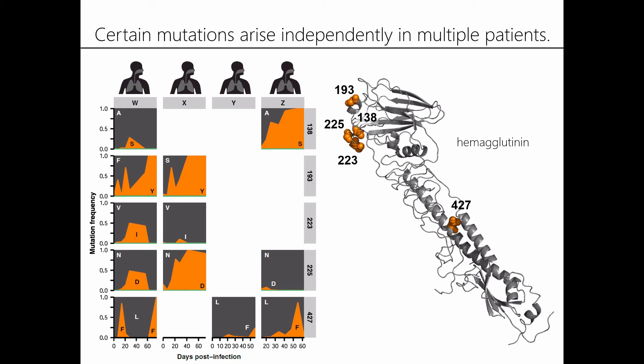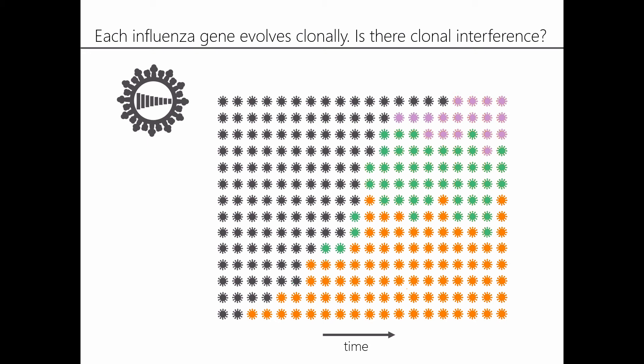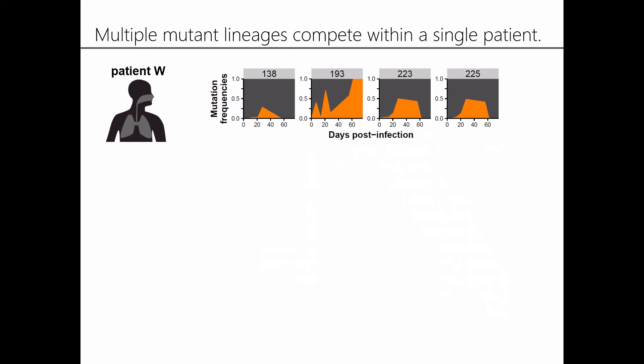Even in the presence of strong selection, we see complicated evolutionary trajectories with a lot of fluctuations. We thought something that might contribute is the fact that each influenza gene evolves clonally without homologous recombination, and we wondered whether clonal interference between beneficial mutations might contribute to these fluctuating dynamics. To try to understand this better, we focused in on four of those mutation sites within the same gene in just one patient. These mutations are actually close enough to one another that using short-read sequencing, we can identify what combinations of mutations are present at what frequencies at each point in time.